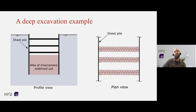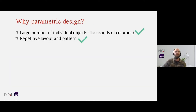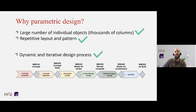For example, when constructing a deep excavation in soft or highly sensitive clay, ground improvement columns may be installed between the retaining wall system to provide lateral support. Why do we believe parametric design is suitable for this? Ground improvement 3D models often consist of thousands of individual objects arranged spatially in repetitive layouts and patterns. In addition, a modern design process is highly iterative and our proposed design is likely to evolve significantly as model maturity is increased. Therefore, ground improvement is tailor-made for parametric design.